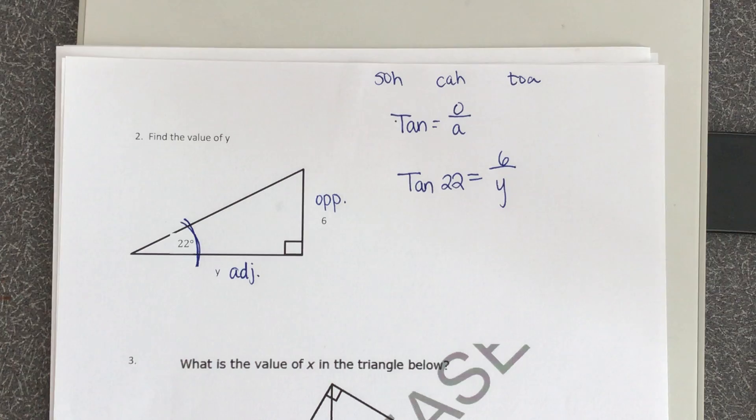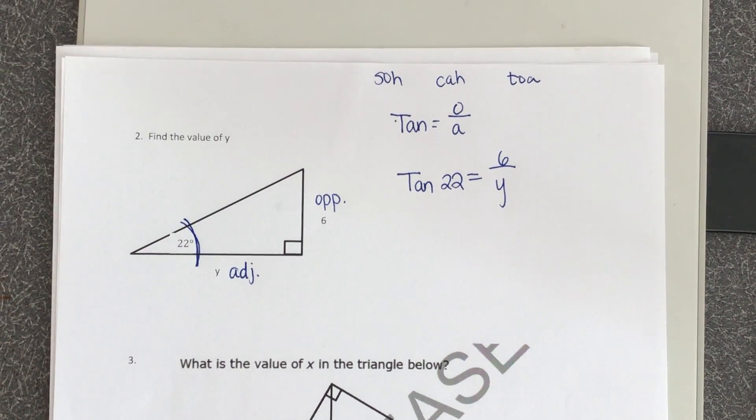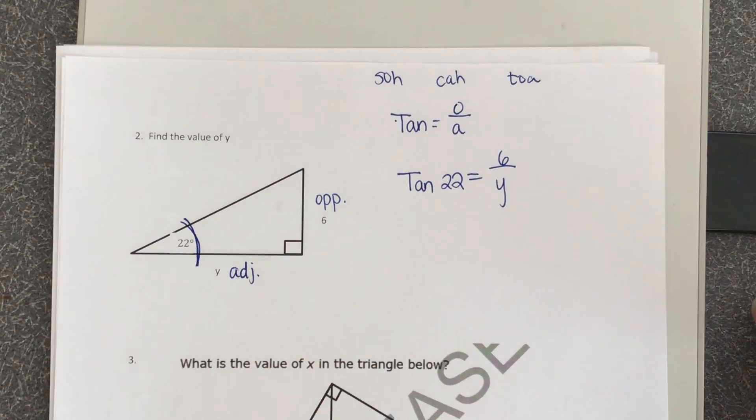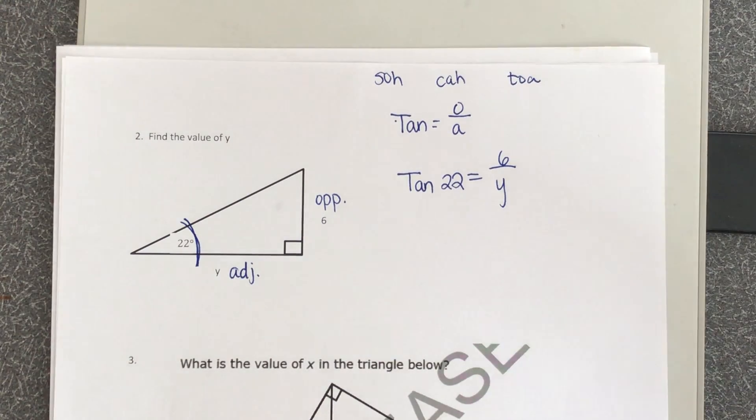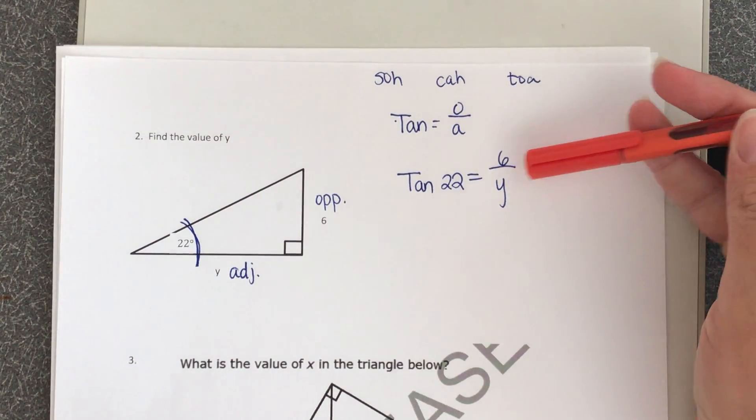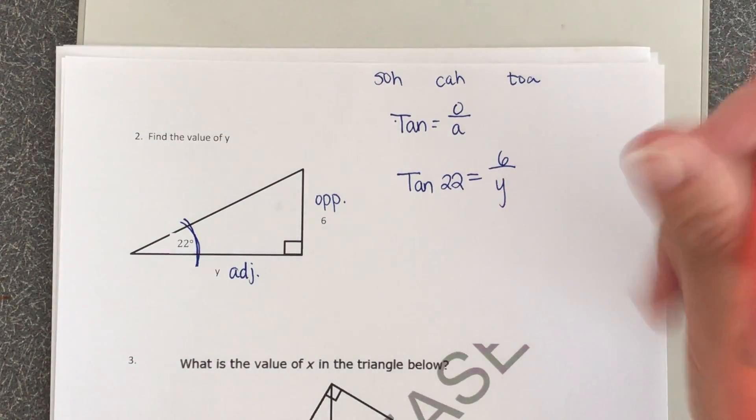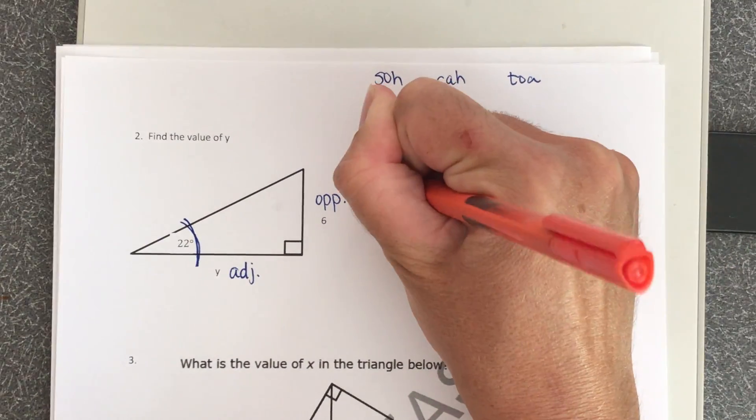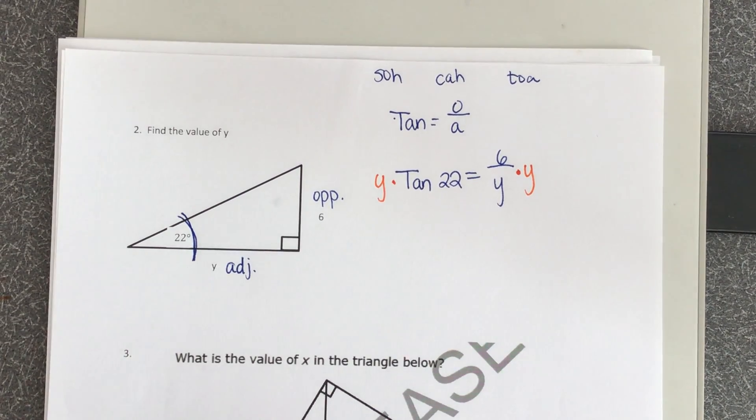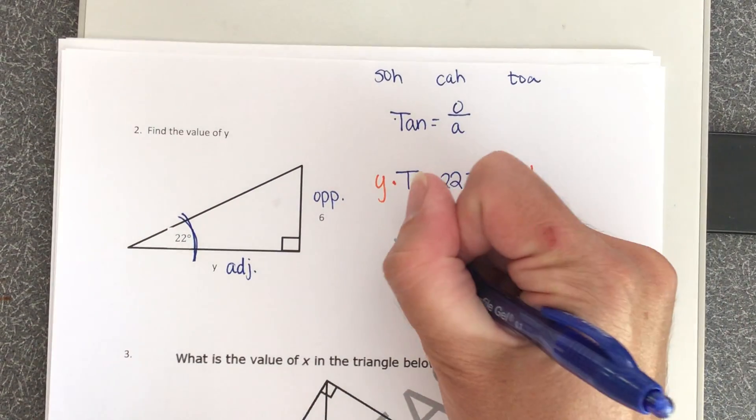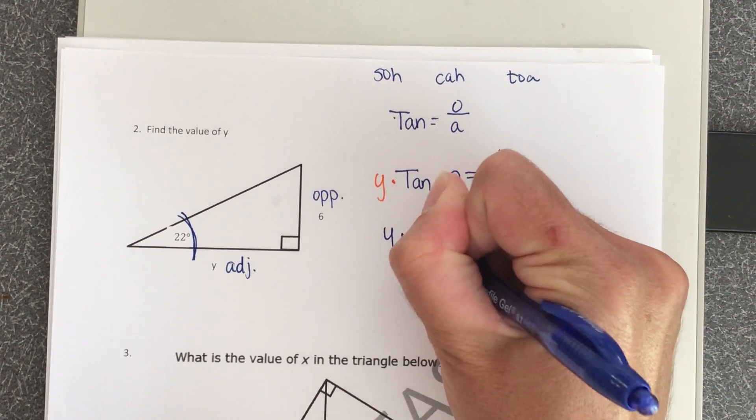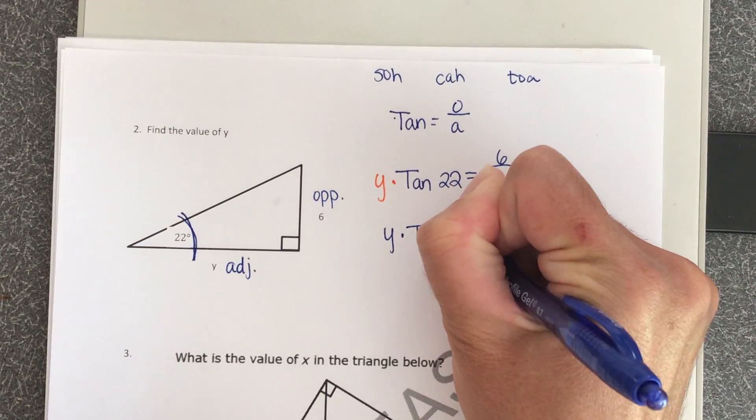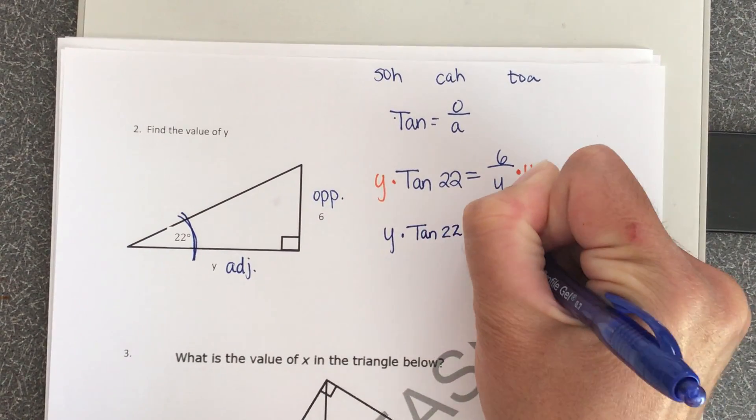Now again, we need to get y by itself. To undo division, we use multiplication. But the problem is y is in the denominator, and when we multiply both sides, we always multiply by the denominator. So I'm going to times both sides by y. That is putting y over there with the tangent. So I have y times tangent 22 is equal to 6.